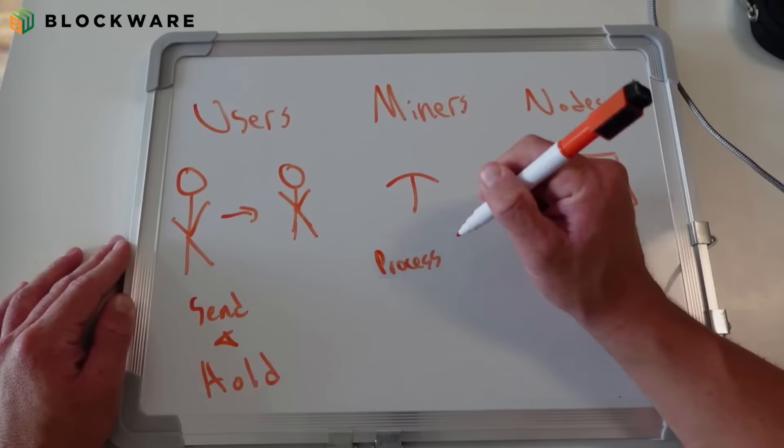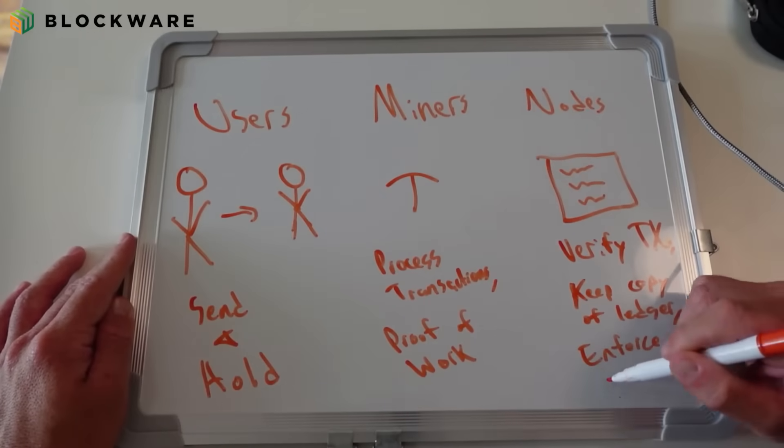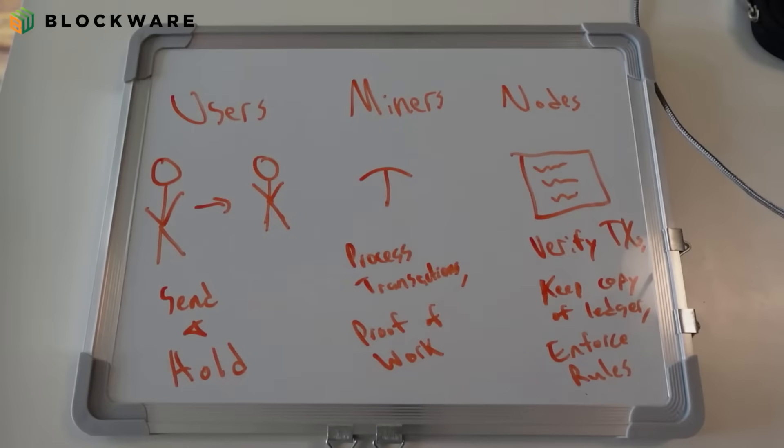Understanding the Bitcoin network involves recognizing the roles of its three key participants: users, miners, and nodes.